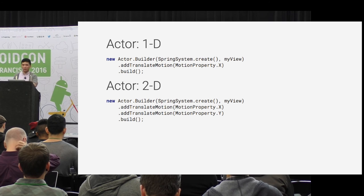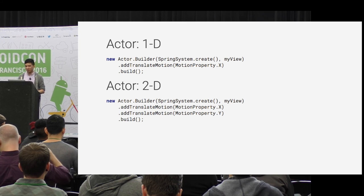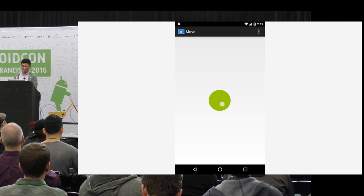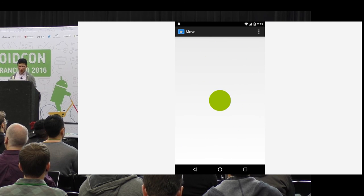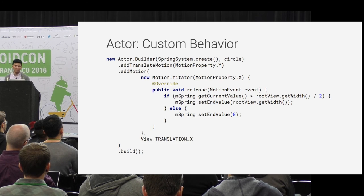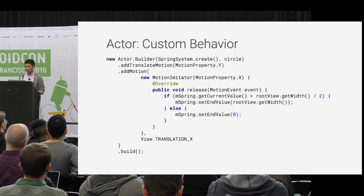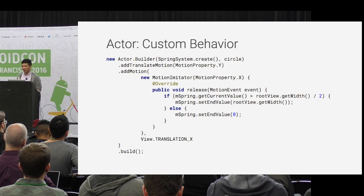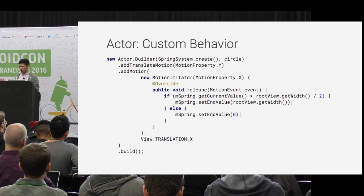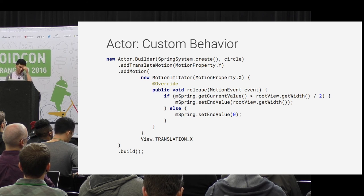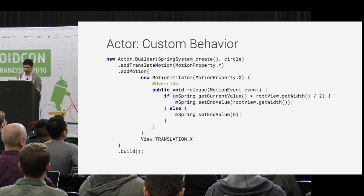In two dimensions you create another spring, so that's why you pass the spring system in - for independent motion in two directions, X and Y. Maybe one day when we have VR you could do it in three dimensions. For custom behavior, you can subclass the motion imitator and say on release: if the current value in the X direction is more than half the root view width, snap to the right; if less, snap to the left, moving the translationX property on the view.